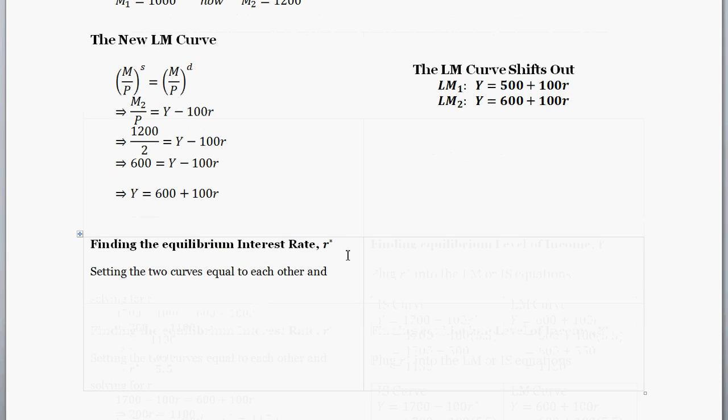So now what we're going to do is find our equilibrium levels of interest rates and income because the question asked us. So how do we do that? Well, we set our two curves equal to each other. So we're going to set the IS curve equal to the LM curve.